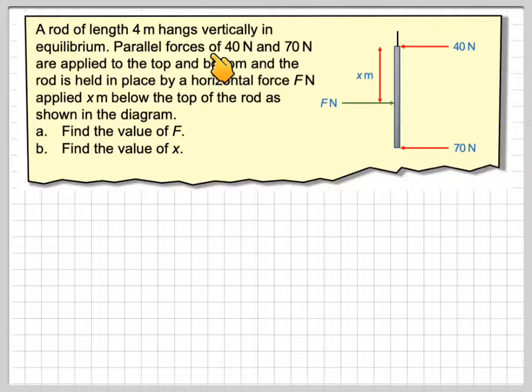A rod of length 4 meters hangs vertically in equilibrium. Parallel forces of 40 and 70 newtons are applied to the top and bottom, and the rod is held in place by a horizontal force F applied X meters below the top of the rod, as shown in the diagram. We've got two forces here and a force here holding it in equilibrium, which is X meters away from the top of the rod. Find the value of F, and then find the value of X.